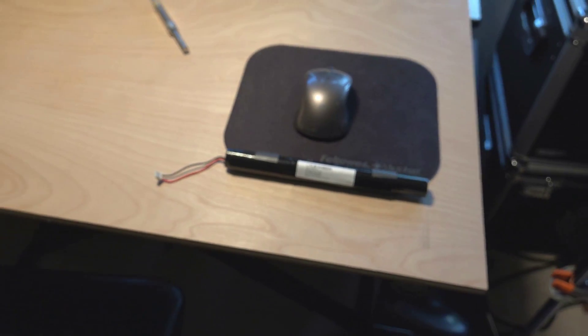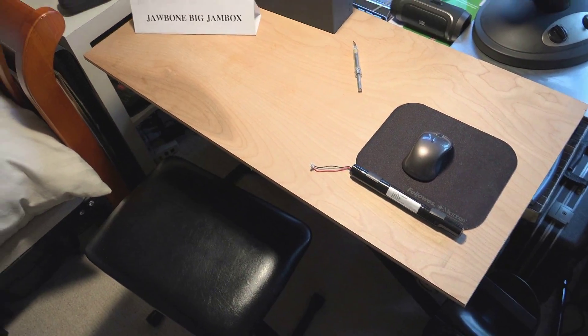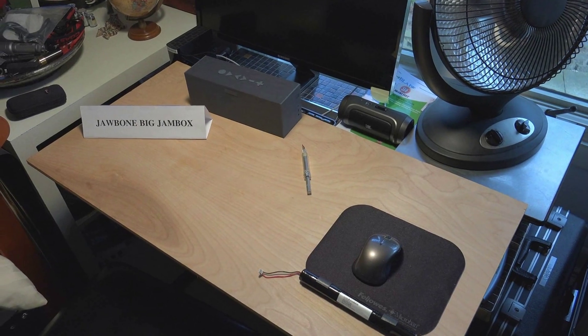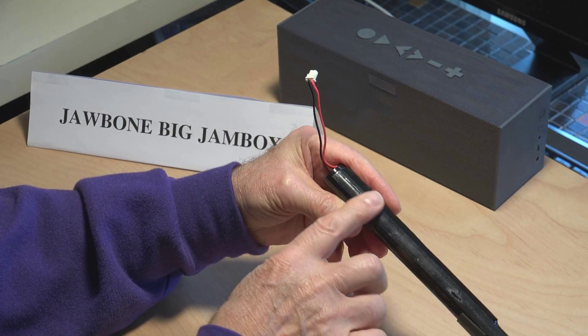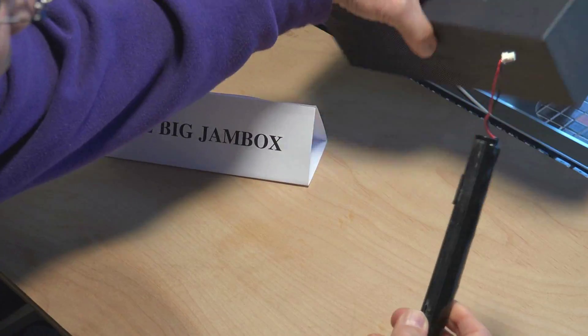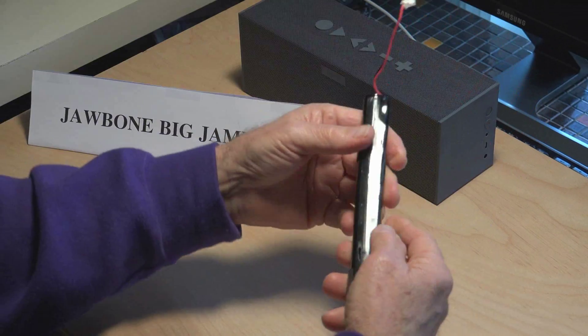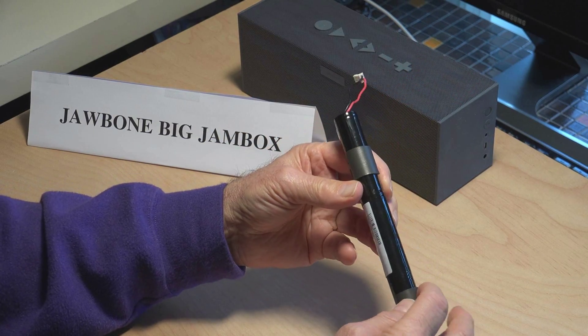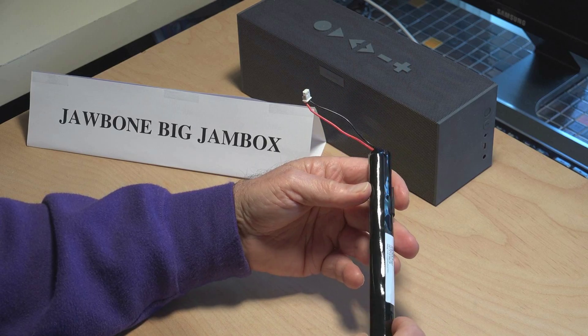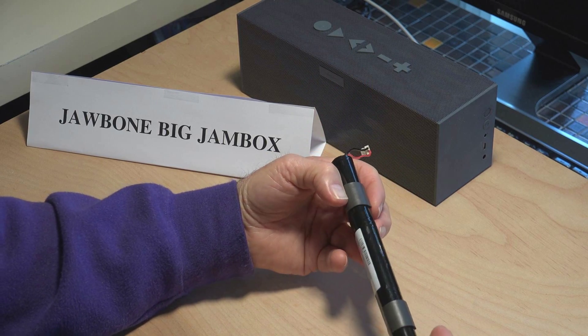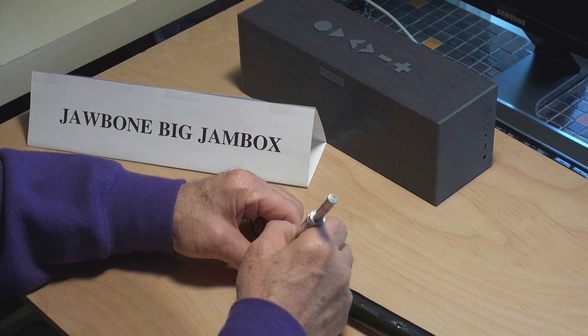Now we're going to disassemble this battery to find out whether or not we can duplicate the battery by substituting other batteries. We've got a positive and negative lead, some self-adhesive tape on here that goes inside the jambox on the bottom side that keeps it from rattling around. It's also got some shock absorbing foam self-adhesive stickers that keep it from rattling around. Let's open it up and see what's inside.